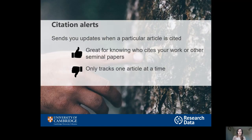Another tool you can use is a citation alert. You can get an email every time a particular article is cited within scientific or research literature. You can do that on the publisher website — on the article page itself there should be a link to do it. You can also do it on databases such as Web of Science or Scopus. It's a great way to know who cites your work in particular. I strongly recommend that if you publish an article, at least for the first few, you do this because it will be nice to know who else is talking about it and what they're saying. You can also follow other people's articles, especially ones that you find really seminal in your field. Of course, this will only track one article at a time, so you need to set up multiple ones — but don't go overboard and set up a huge number of them because it will become slightly overwhelming.